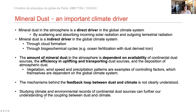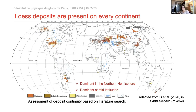One way to get a deeper understanding is to study records of continental dust sources. Loess deposits are an example of continental dust sources, and they are present on every continent. However, as seen from the distribution map, there is more dominant loess distribution in the northern hemisphere, within the mid-latitudes.